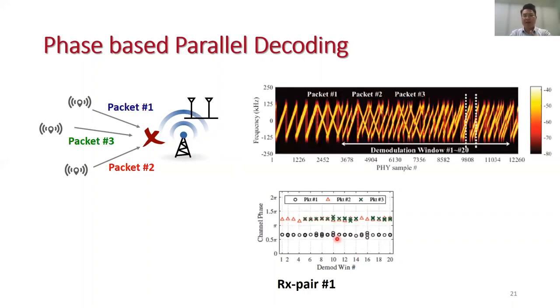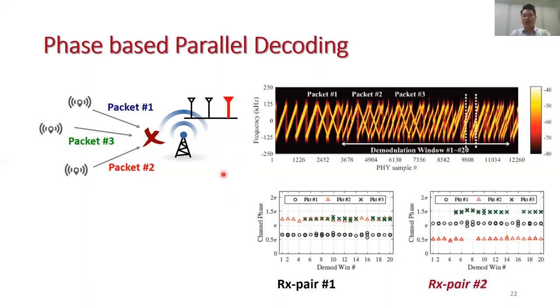If some packets have similar phase, we can try to add a new antenna. For instance, packet number two and packet number three cannot be separated at the first antenna pair. But if we observe from a new antenna pair, these three packets can all be separated. In practice, it is not meant that all packets will have the same air channel to all receiver antennas. So we can always add new antennas to create spatial diversities and leverage the channel diversity to decode more packets.